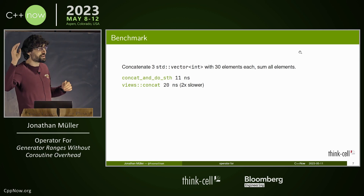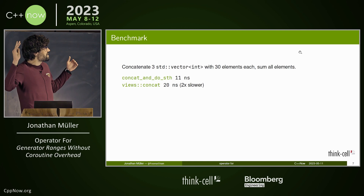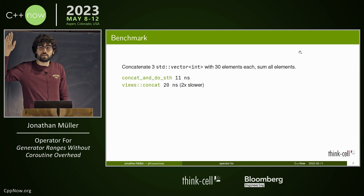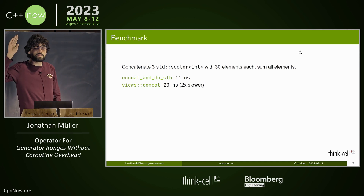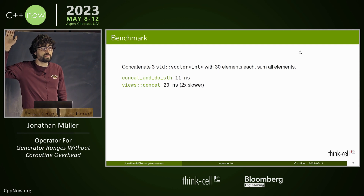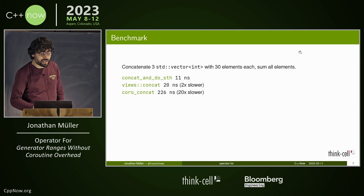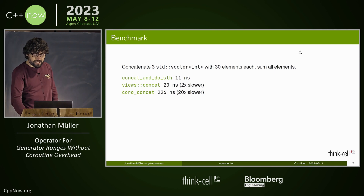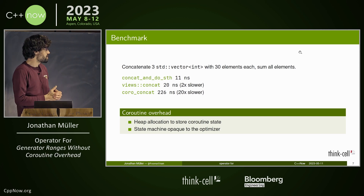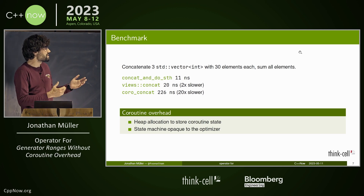Some of you have seen the title of the talk. We're doing the same thing as the iterator, so maybe it's two times slower? Or maybe three times, four, five... it's actually 20 times slower. This is caused by heap allocation to store the coroutine state, and the state machine is still pretty opaque to the optimizer. The overhead would be relatively smaller when doing more work than just adding 90 integers, but it's still pretty bad.